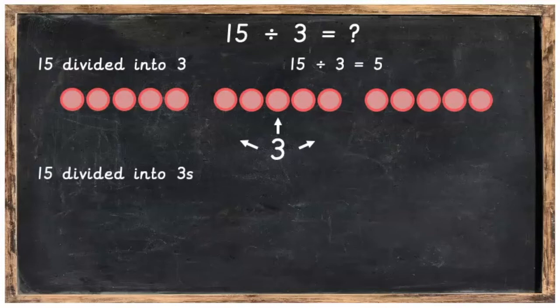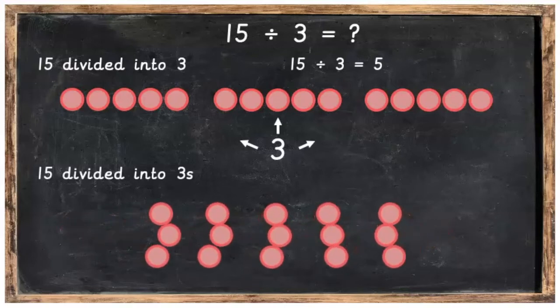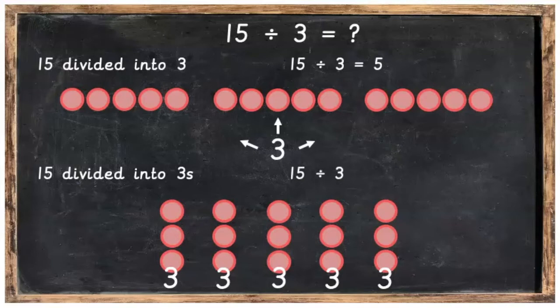We can also say 15 divided into 3's — so we take 15 and we divide it into 3's. There are 5 3's here, so 15 divided by 3 is equal to 5 also.